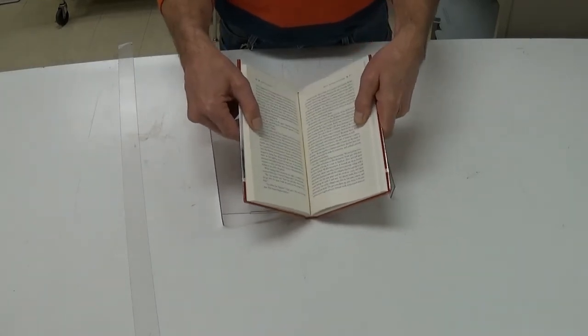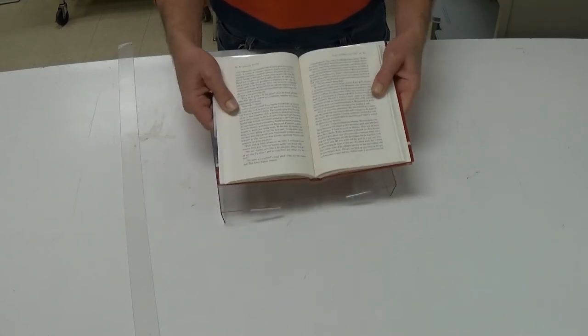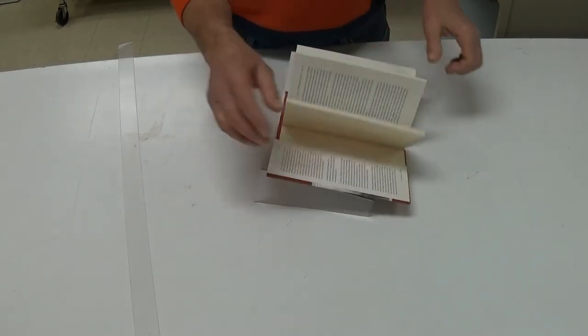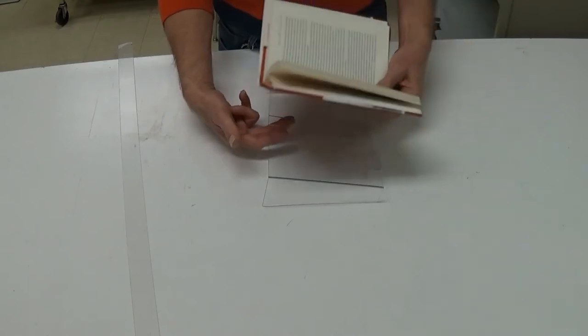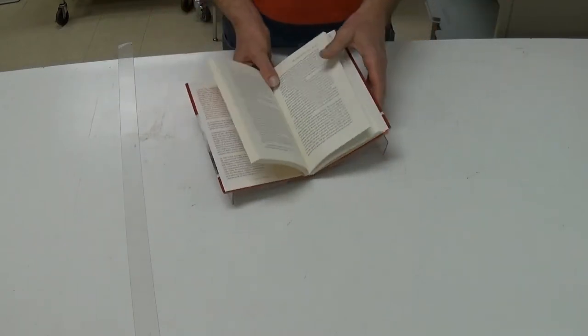You'd have it more closed but you can still see the pages. They do tend to settle a bit and sometimes I'll put a support mechanism underneath there depending on the size of the book.